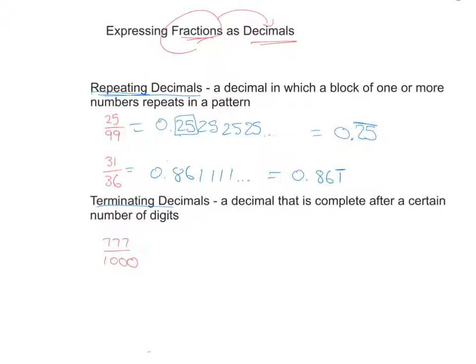The contrast to a repeating decimal is a terminating decimal. A terminating decimal is a decimal where it stops. Eventually, it comes to an end. It doesn't keep going forever and ever. So this is an example: the decimal 777 thousandths would be written as, just a reminder, the decimal place. We've got our tens, hundreds, thousands. So how many thousands do we have? We have 777, and I'm going to just put a 0 in front, and it ends. It stops. It comes to an end. So we call it a terminating decimal.